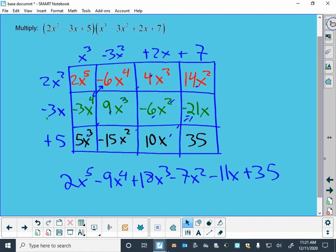So that is our answer. When we multiply that quadratic times the cubic, we get a degree five polynomial with six terms.